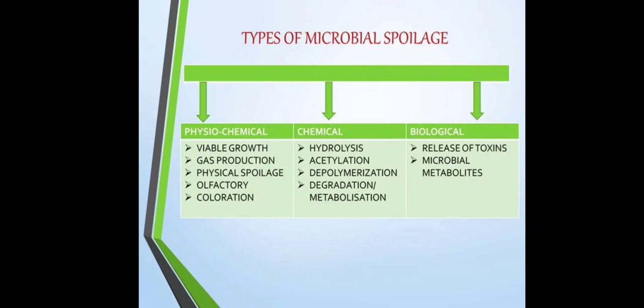Types of microbial spoilage: first is physiochemical, second is chemical, and third is biological. Physiochemical types include visible growth, gas production, physical spoilage, and olfactory coloration. Chemical types include hydrolysis, acetylization, depolymerization, degradation, and metabolization. Biological types include release of toxins and microbial metabolites.